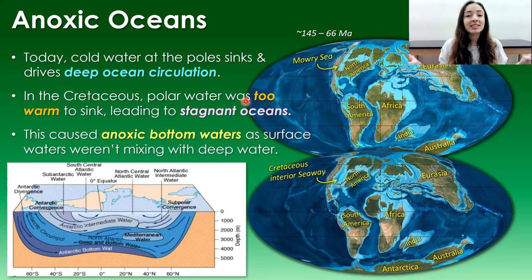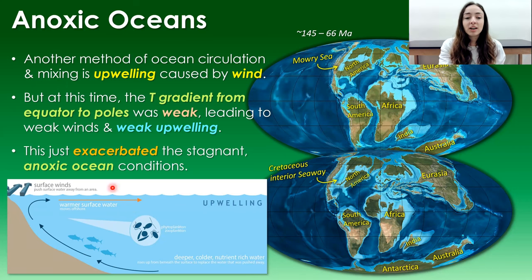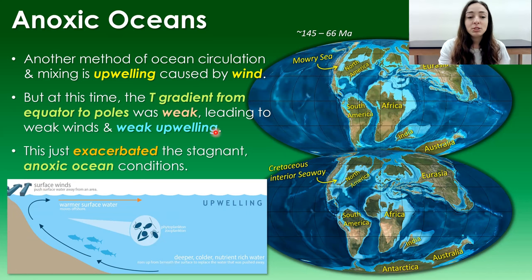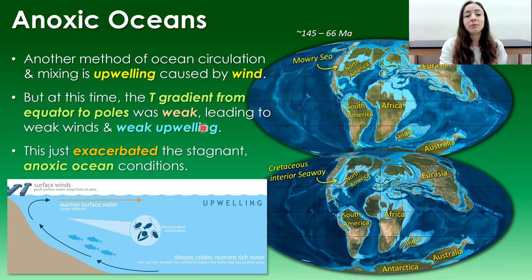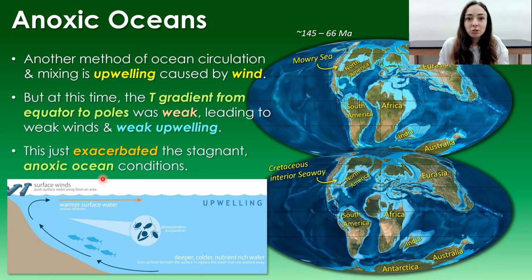This caused anoxic bottom waters — there was no mixing or oxygen supply to the deep. Another method of ocean mixing is upwelling at oceanic margins caused by surface winds, which provides nutrients to surface waters. But during the Cretaceous the temperature gradient from equator to poles was not strong enough to allow strong upwelling. Weak temperature gradient means weak winds, which means weak upwelling, exacerbating the stagnant anoxic ocean problem.